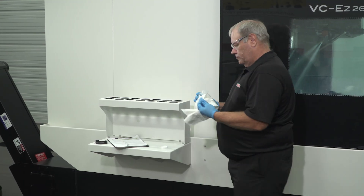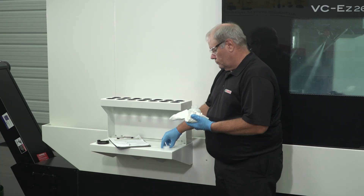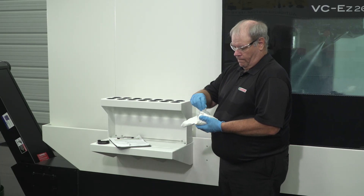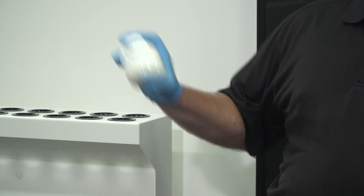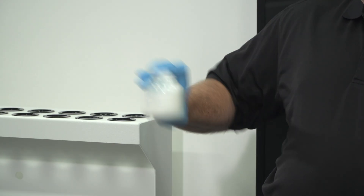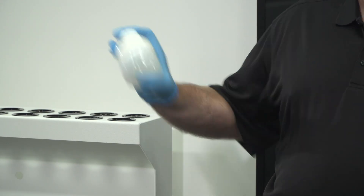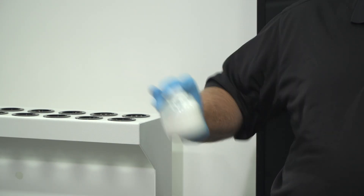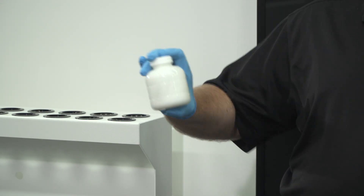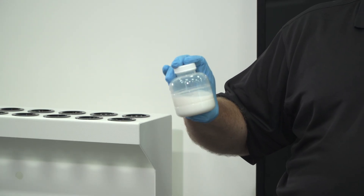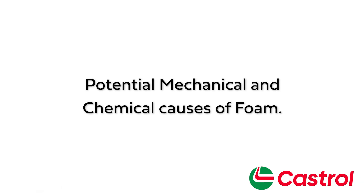To determine whether the cause of foam is chemical or mechanical, a simple shake test can be performed. This is done by filling a clear bottle half full with the system fluid and shaking vigorously for 15 seconds. If the foam breaks quickly, the coolant is performing as expected and it is a mechanical issue. If the foam persists, it is a chemical issue.